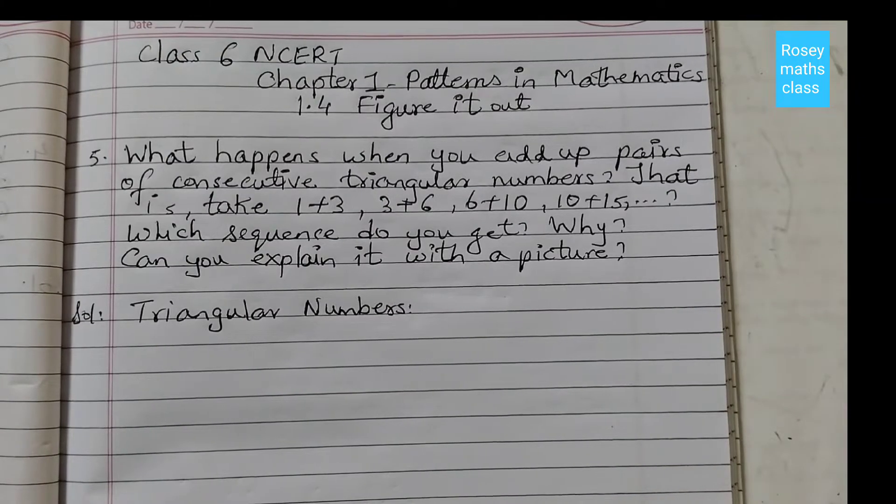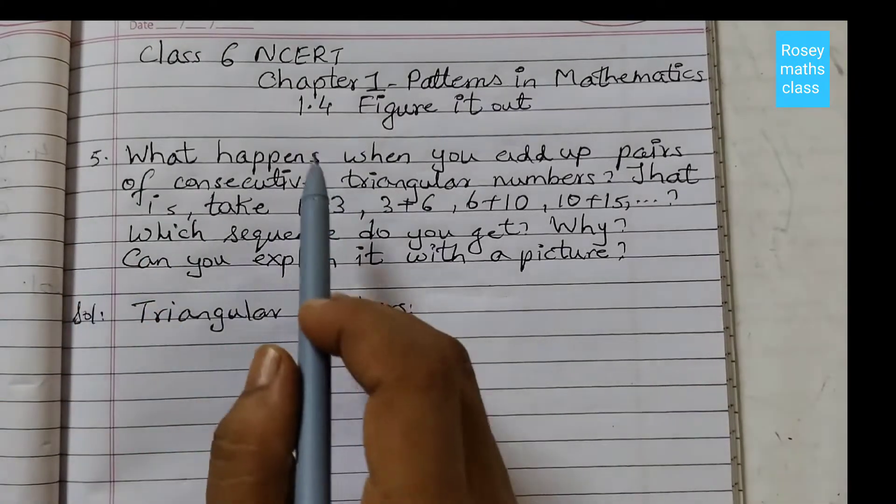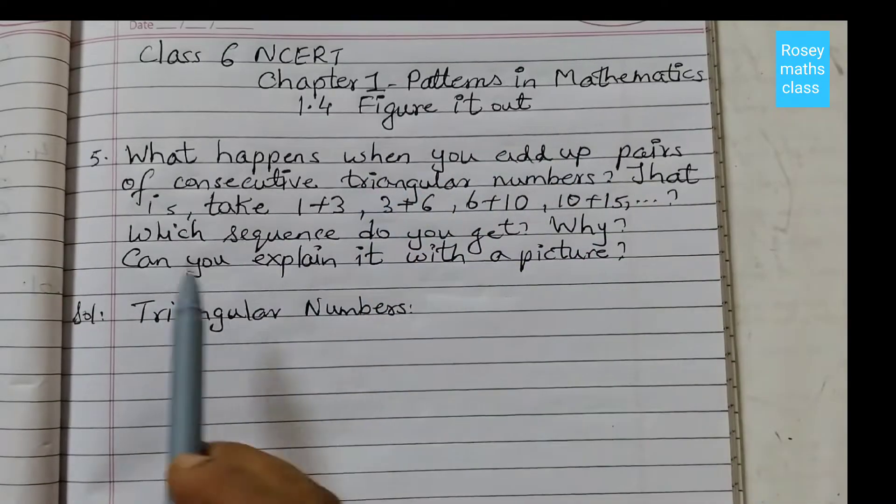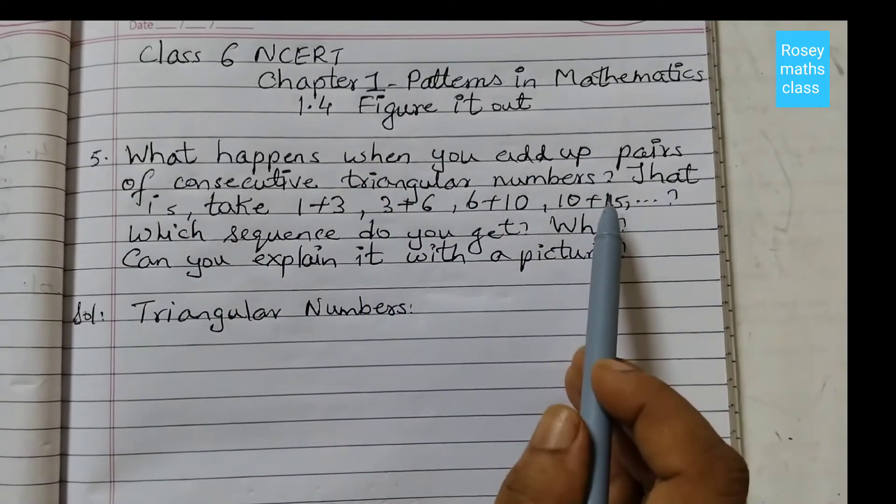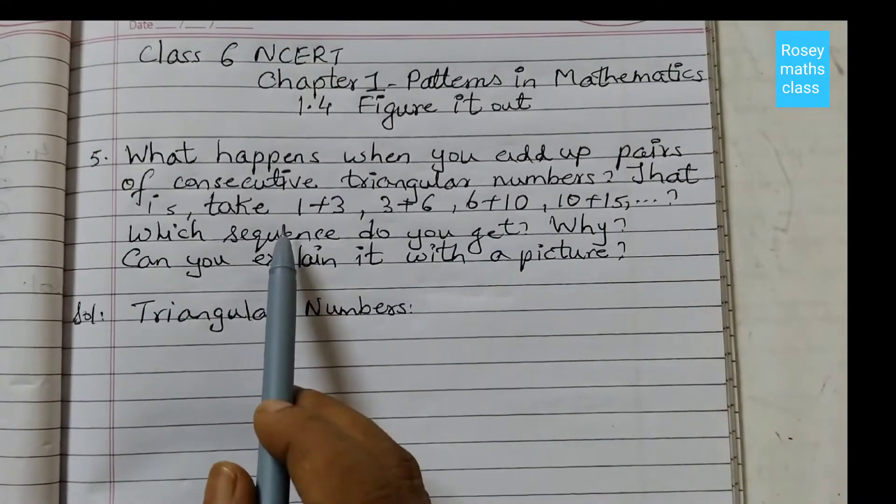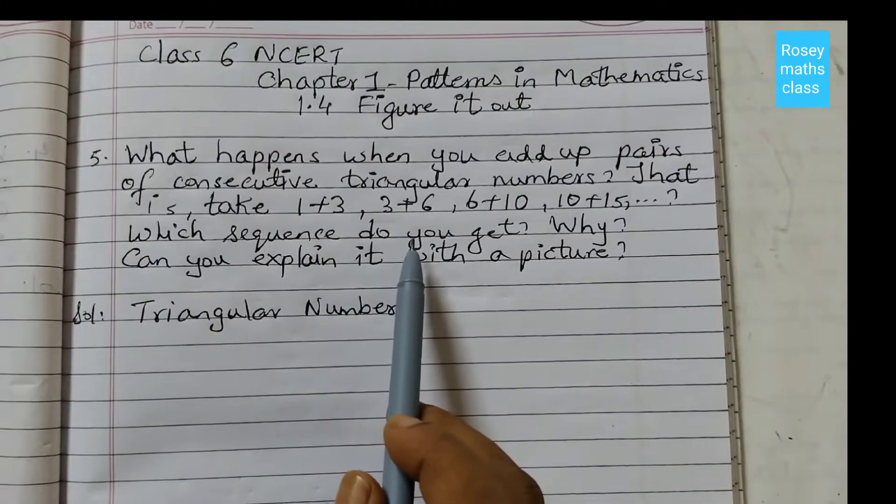Hello students, today we shall discuss question number 5 of 1.4 Figure It Out, chapter name is Patterns in Mathematics. What happens when you add up pairs of consecutive triangular numbers? That is, take 1+3, 3+6,